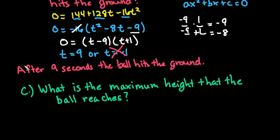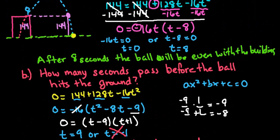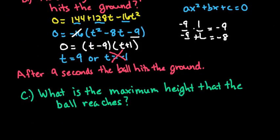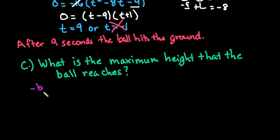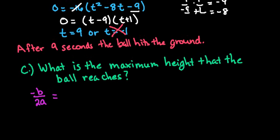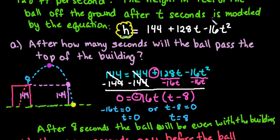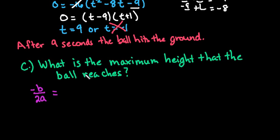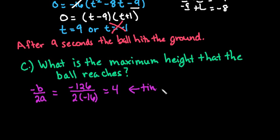They may also ask what is the maximum height that the ball reaches. We're trying to figure out at what point the turning point happened — that is known as the vertex. The maximum is the vertex. To get the x-coordinate we use negative b over 2a. Going back to our equation, a is negative 16, b is 128, and c is 144. So we have negative 128 divided by 2 times negative 16, which gives us 4. So t equals 4 is the time when it reaches the maximum.